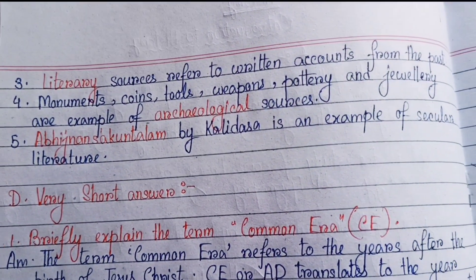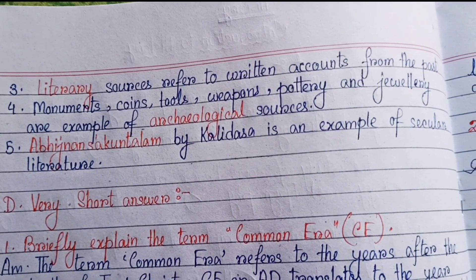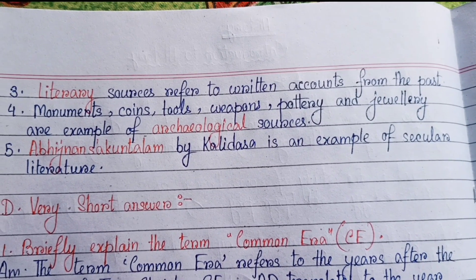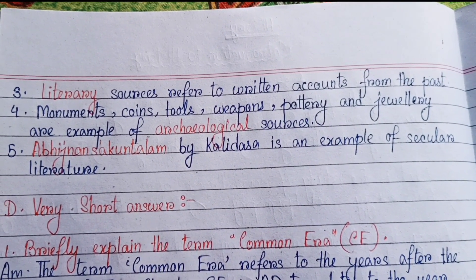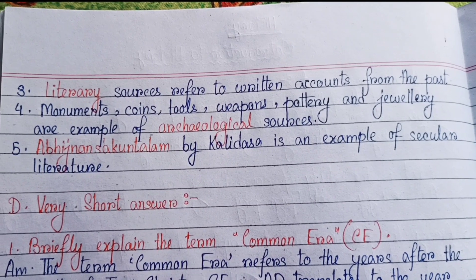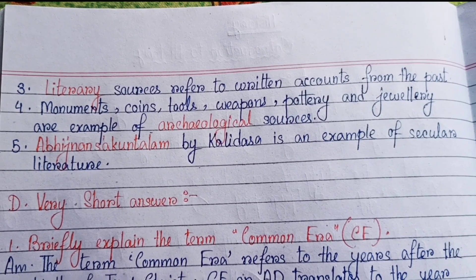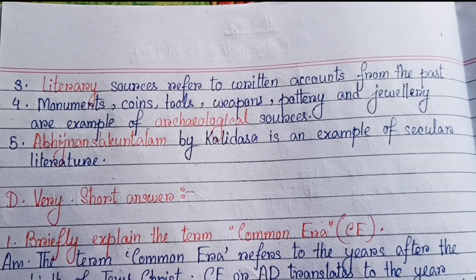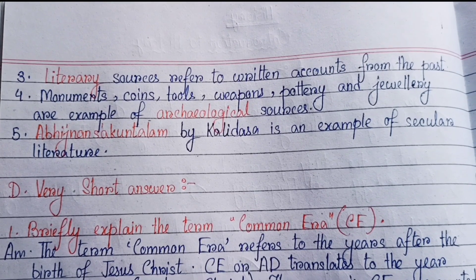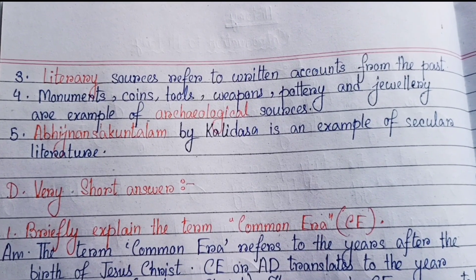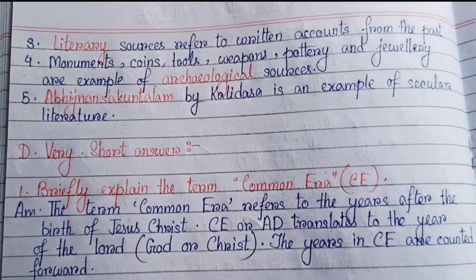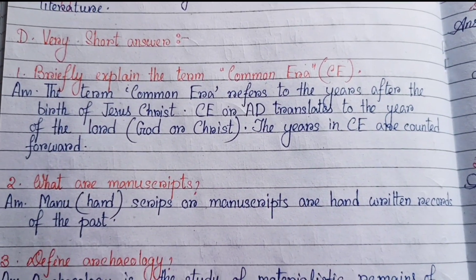Number three: literary sources refer to written accounts from the past. Number four: monuments, coins, tools, weapons, pottery and jewelry are examples of archaeological sources. Number five: Abhijnana Shakuntalam by Kalidasa is an example of secular literature.